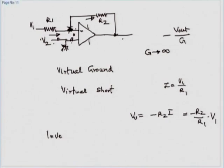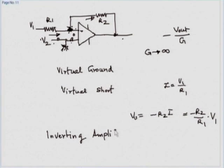So we have a linear device — the output is a linear function of input and the gain of this device is negative, given by R2/R1. This is called an inverting configuration or inverting amplifier.